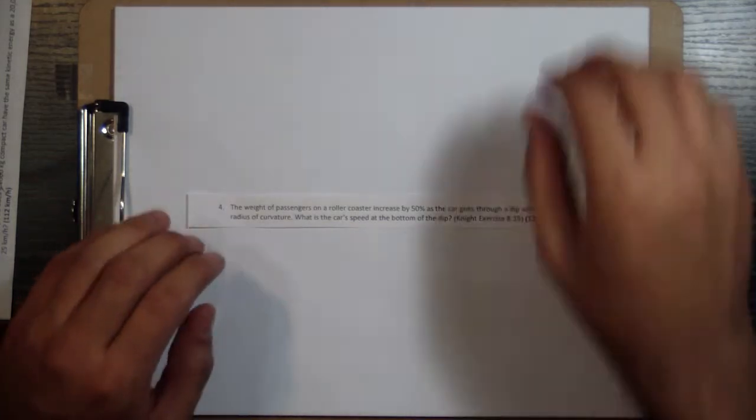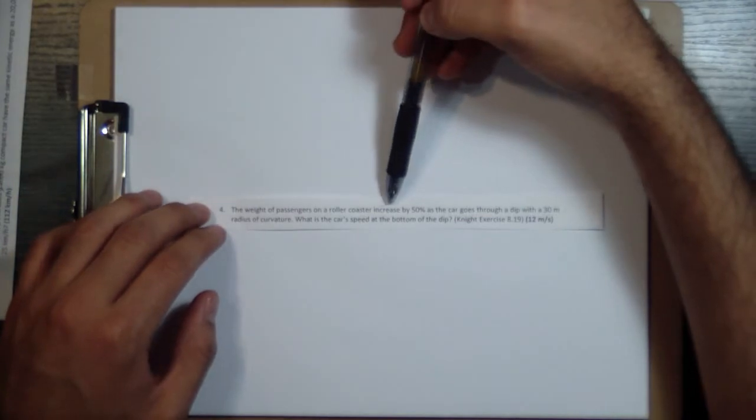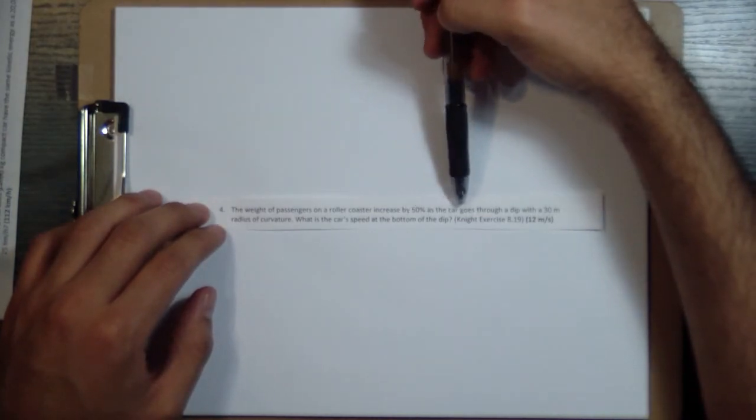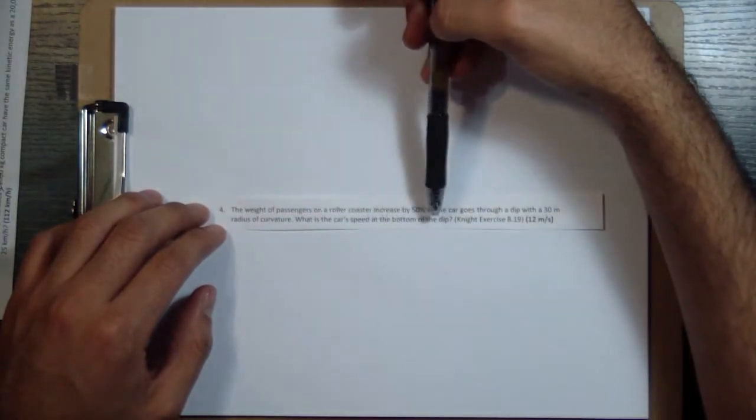This is problem number four. I'll read it to you. The weight of passengers on a roller coaster increases by 50% as the car goes through a dip with a 30 meter radius of curvature. What is the car's speed at the bottom of the dip?